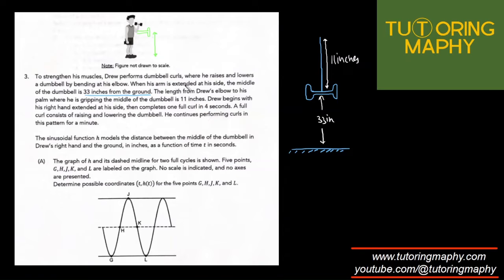A sinusoidal function h models the distance between the middle of the dumbbell in Drew's right hand and the ground in inches as a function of time in seconds. The graph of h and its dashed midline for two full cycles is shown with five points labeled. Determine possible coordinates.